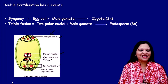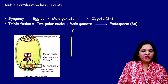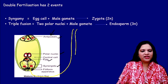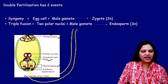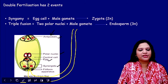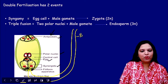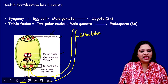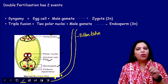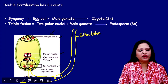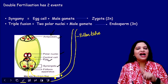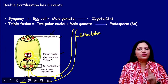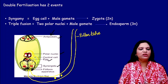The pollen tube enters the female embryo sac through the micropylar end, through one of the synergid cells. It is bringing two male gametes. One male gamete will fertilize the egg cell, and the other male gamete will swim further and fertilize the two polar nuclei. These are the two events which occur in double fertilization.